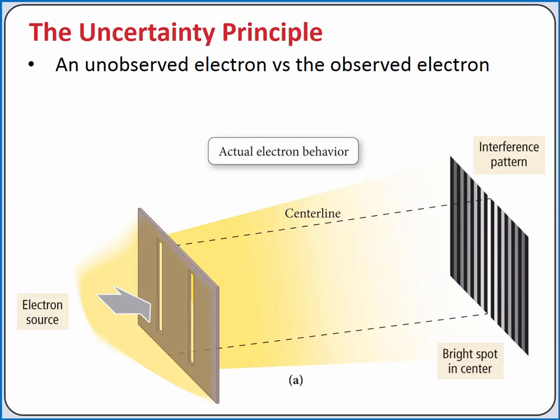To recap, if we run our diffraction experiment with a stream of electrons, we get an interference pattern as if it's functioning as a wave.